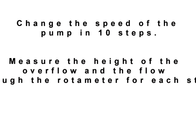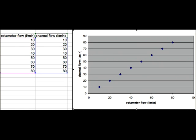If you actually want to perform the experiment, what you can do is you can change the speed of the pump in 10 steps. For each step, measure the flow through the rotameter and measure the height of the water in the overflow. If you document everything in a table and plot a graph out of it, you can see how accurate your measurement has been.